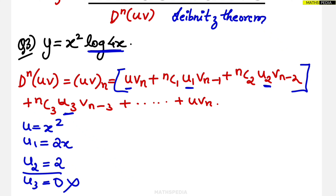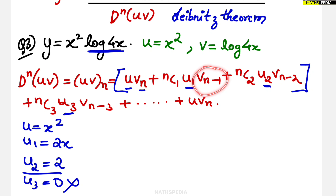Now let us find the other function. u is always the polynomial, which is x squared. v will be the other function of x, which is log(4x). We need to check whether v has an nth derivative formula, because in the Leibniz formula we need vn, vn-1, and vn-2. There is indeed a direct formula for the nth derivative of log(ax + b).